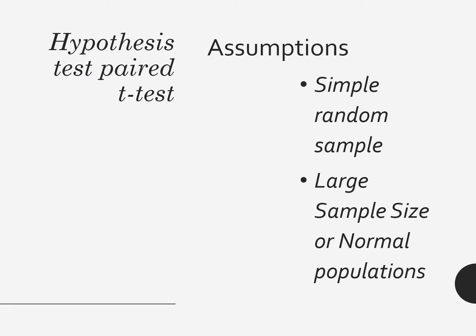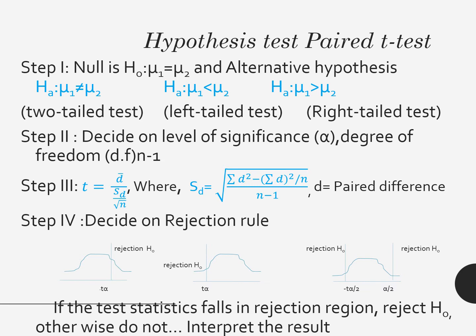Basic assumptions for these tests are simple random sample and large sample size or normal population. What is the procedure we are going to use for hypothesis test for paired sample t-test? The procedure will remain the same.